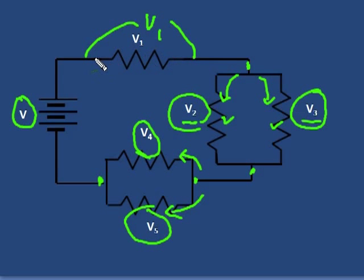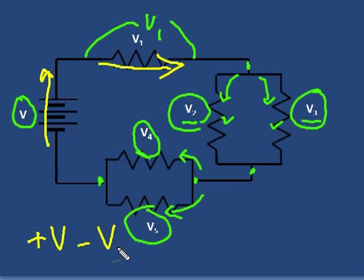Now, it will also be true that the voltage gains and losses around this circuit will still add to zero. As I gain V from the battery, I can write down plus V. Obviously, a loss of negative V1 we'd write down from the first resistor. Now, here, we can either have a voltage drop of V2 or V3. They're both the same, but only one.